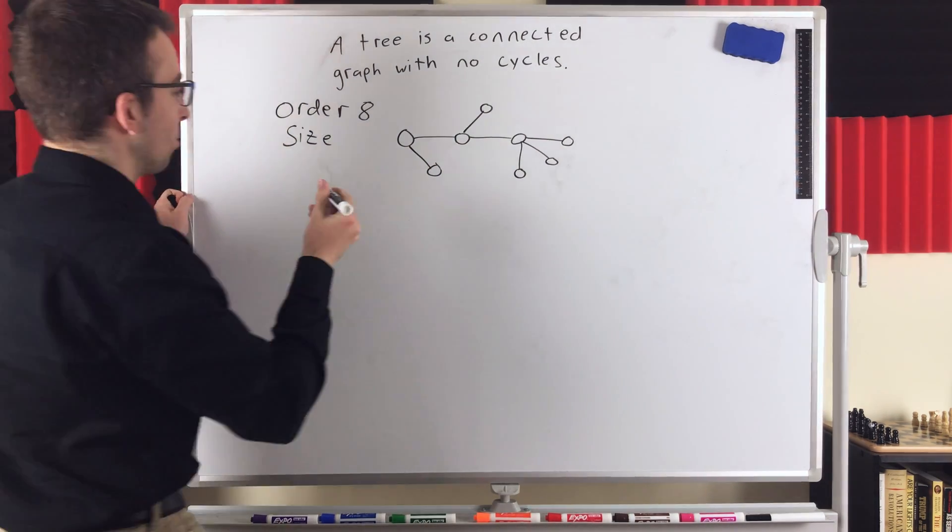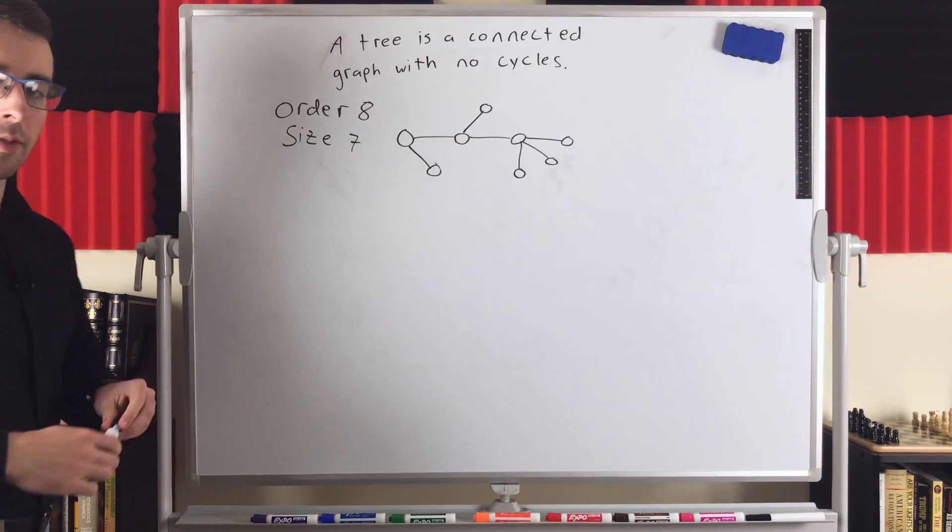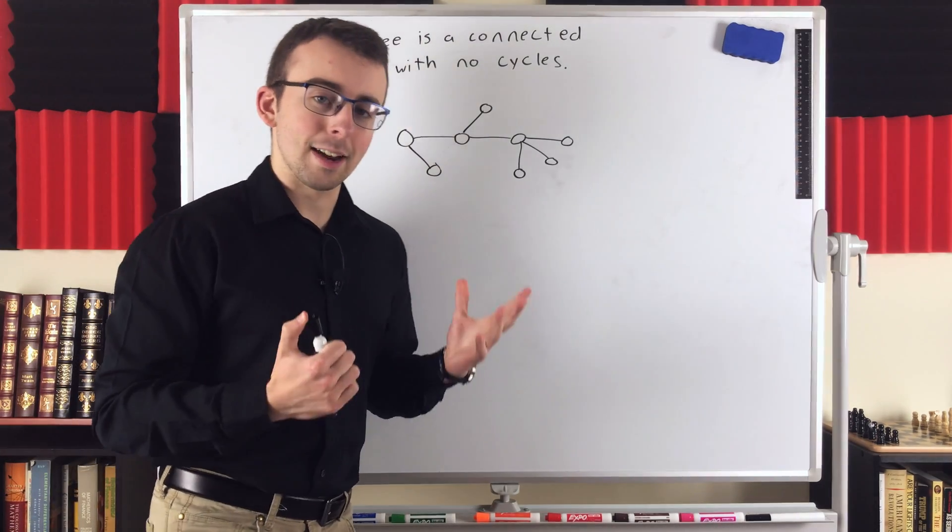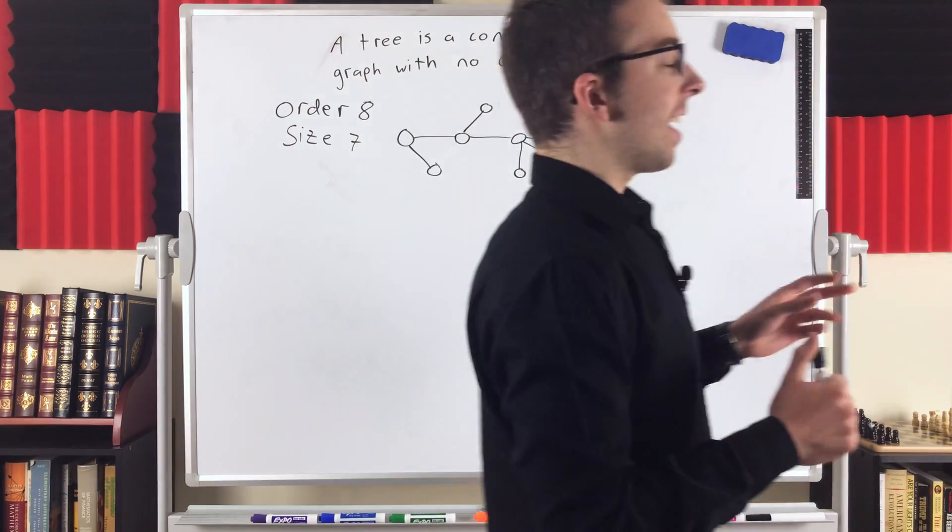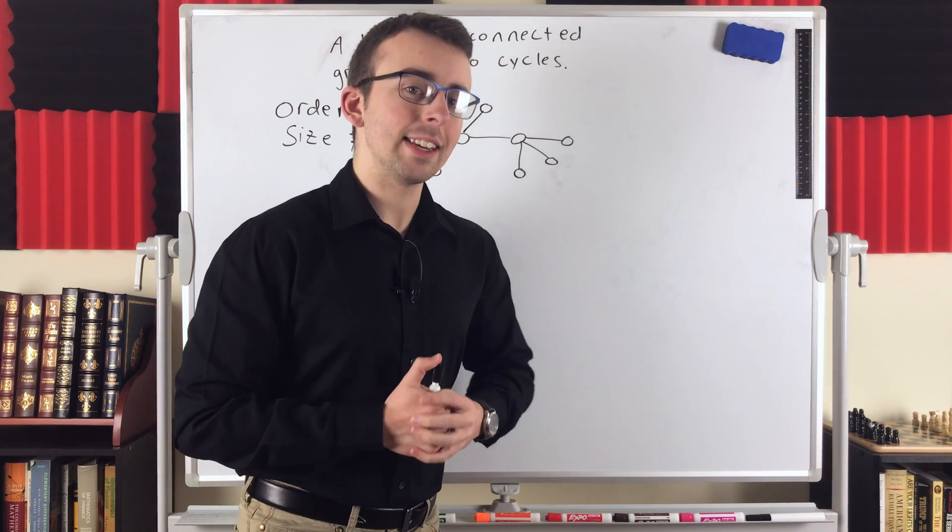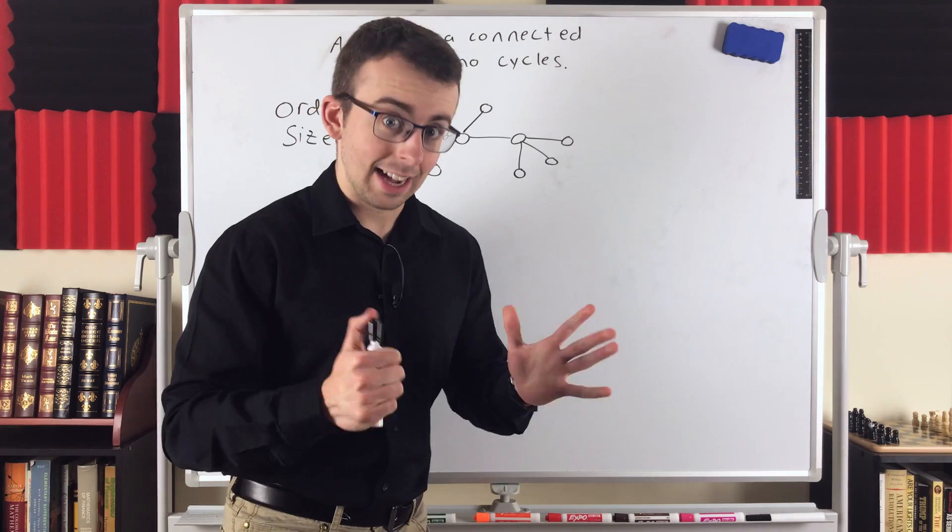That's 8 minus 1, if I've ever seen 8 minus 1. Size is 7, 1 less than the number of vertices. A tree, the number of edges in a tree is 1 less than the number of vertices. Pretty cool. And again, that's not just a property of trees, that's an equivalent definition. A connected graph with 1 less edge than it has vertices. That's a tree.